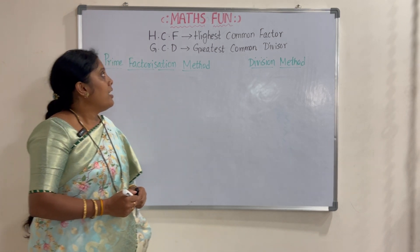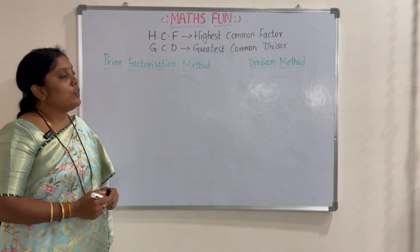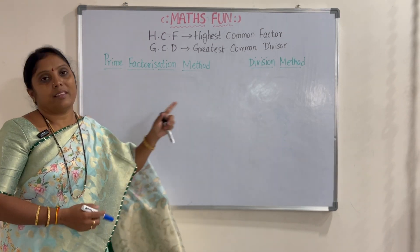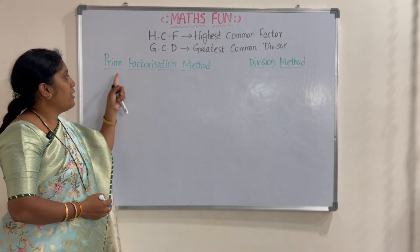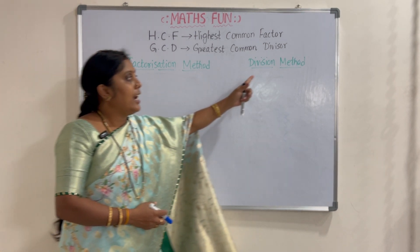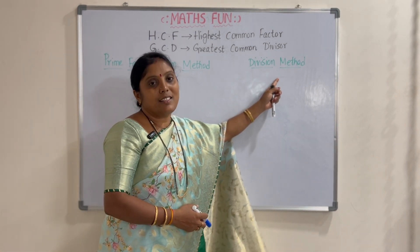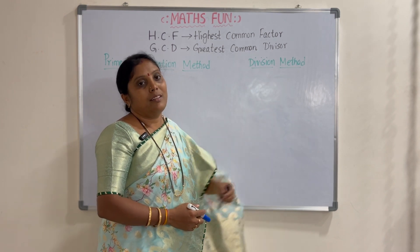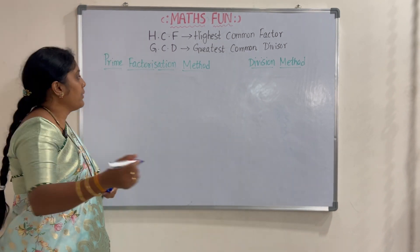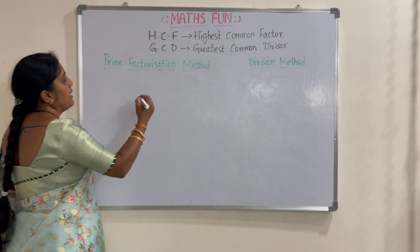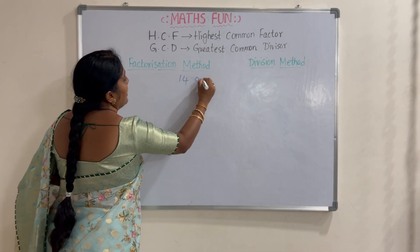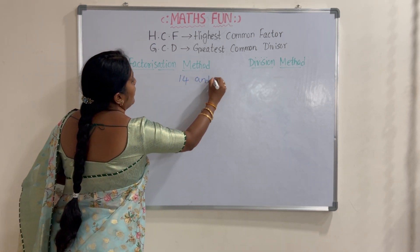Now we will see how to find out the HCF of two numbers in two methods. The first one is the prime factorization method and the second one is the division method. Let us learn using one example — the two numbers 14 and 24.